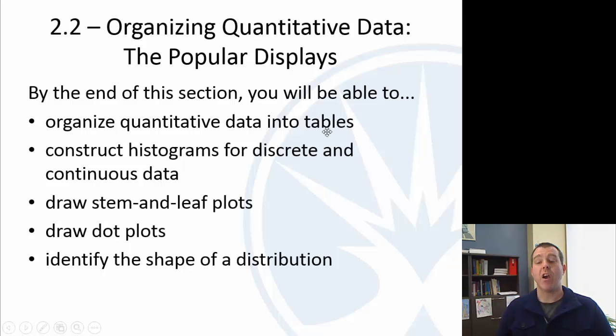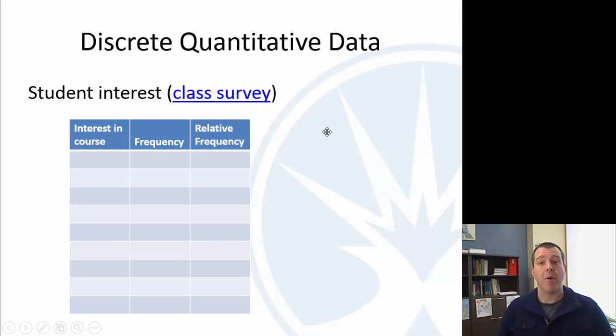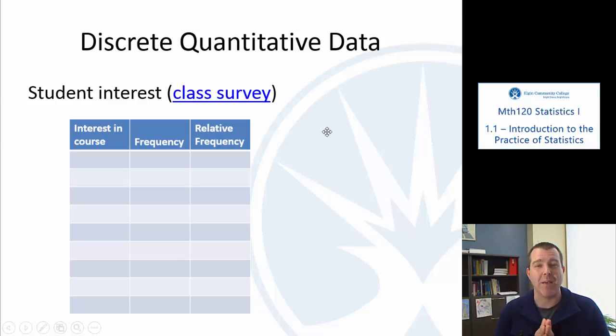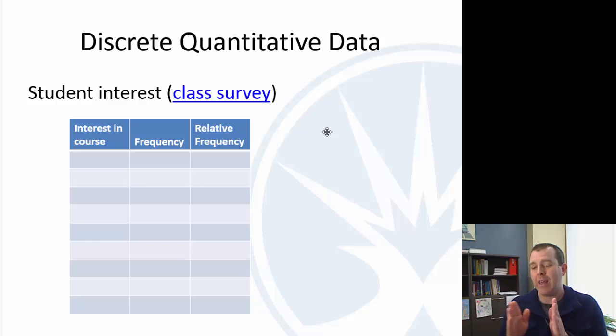So let's start with discrete data. Remember, discrete data were countable: 1, 2, 3, 4. Not measuring anything, how long is something, but countable.